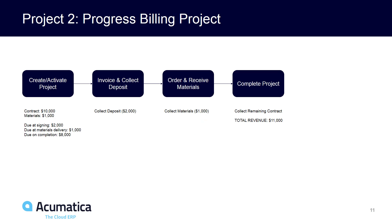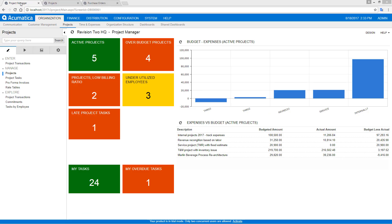In the next project we'll look at a fixed price or progress billing situation. In this case we'll have a contract for $10,000. $1,000 will be billed for materials. When we sign the contract we're going to collect a $2,000 payment, and when the materials are delivered we're going to collect an additional $1,000. When we finish the work we'll collect the remaining amount of $8,000.